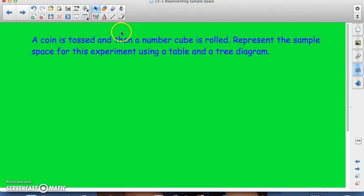Let's look at another example. A coin is tossed and then a number cube is rolled. Represent the sample space for this experiment using a table and a tree diagram.